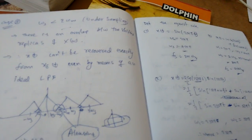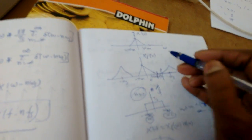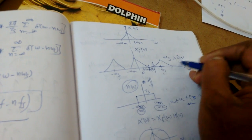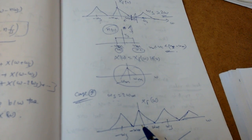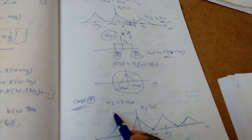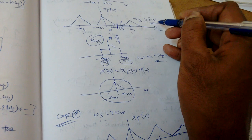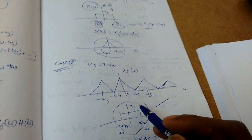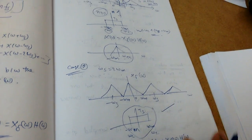So this is about sampling. In summary: when omega_s is greater than 2*omega_m we have over-sampling with no aliasing effect; when omega_s equals 2*omega_m we have critical sampling, which is the critical edge of aliasing. The moment the sampling frequency falls below this threshold, aliasing begins.